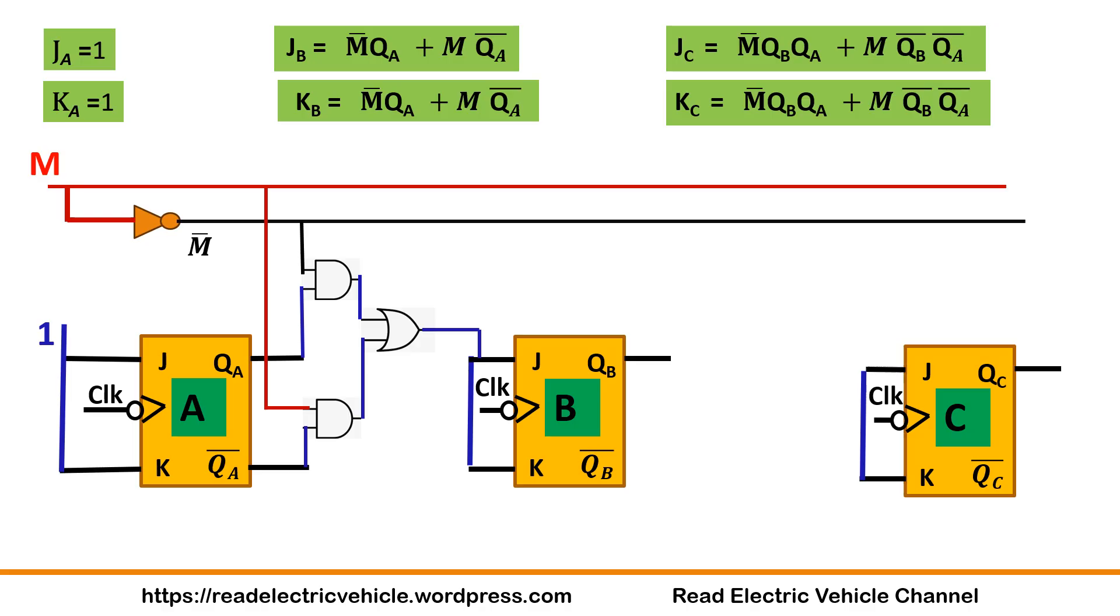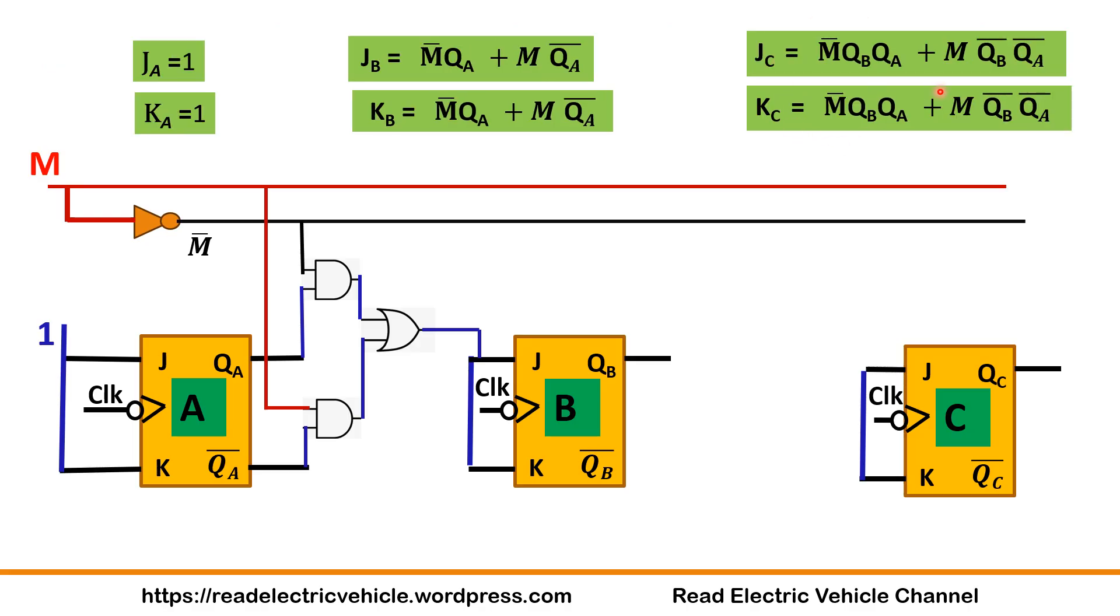Similarly this side. What is this? M̄·QB·QA. I have taken the AND gate from this already existing M̄·QA term, same term, just AND with QB. Similarly here you will get one more AND gate. Both are connected through OR gate and connected to the C flip-flop.